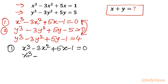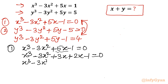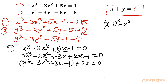I will split 5x as 3x + 2x, giving x³ - 3x² + 3x + 2x - 1 = 0. Now consider x³ - 3x² + 3x - 1 — this is reminding us of the algebraic identity (x-1)³ = x³ - 3x² + 3x - 1. Both are matching, so I write this as (x-1)³ + 2x = 0.